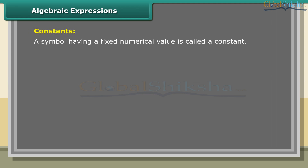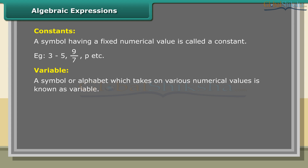Constants: a symbol having a fixed numerical value is called a constant. Examples: 3, minus 5, 9 upon 7, π, etc. Variable: a symbol or alphabet which takes on various numerical values is known as a variable.